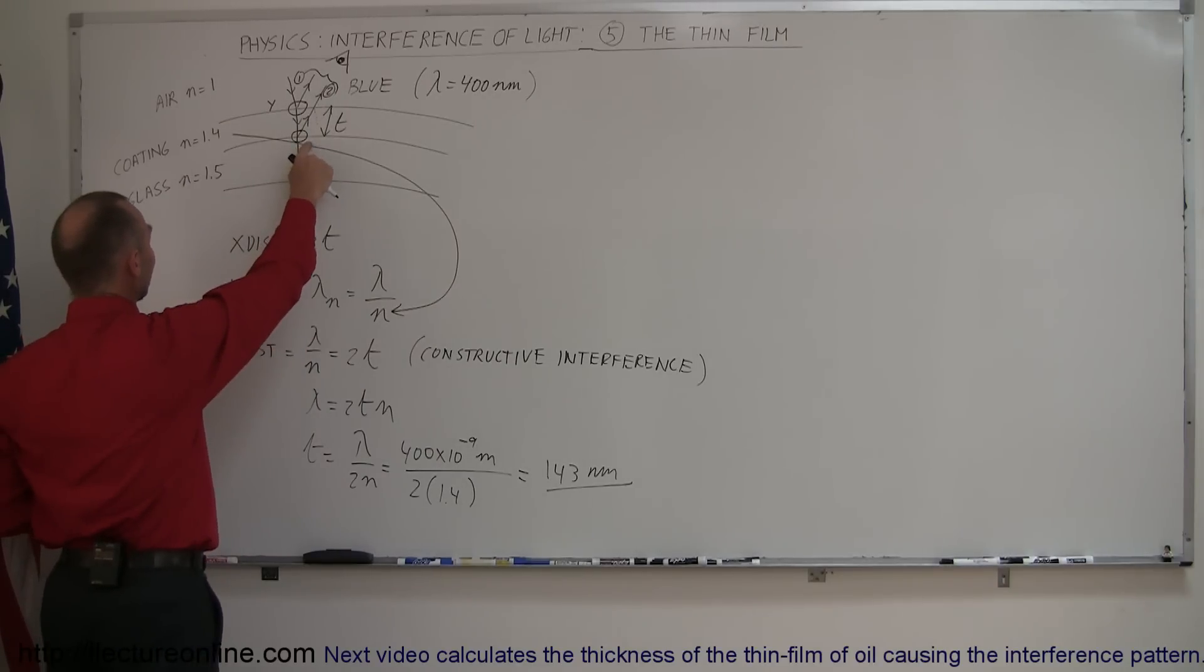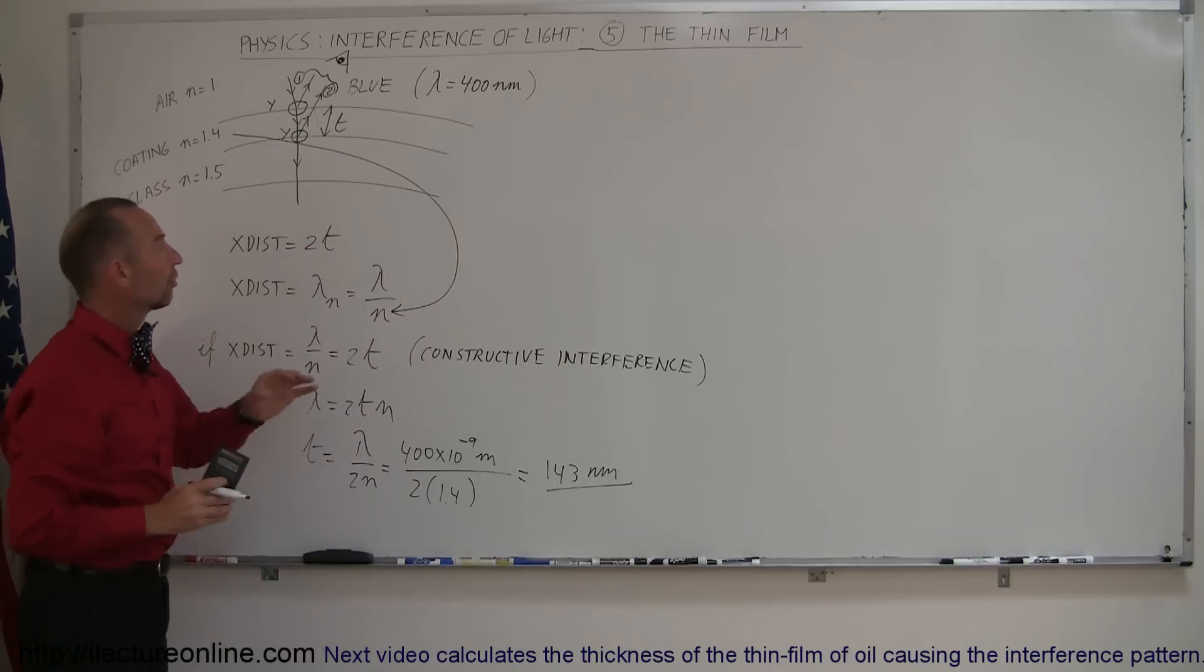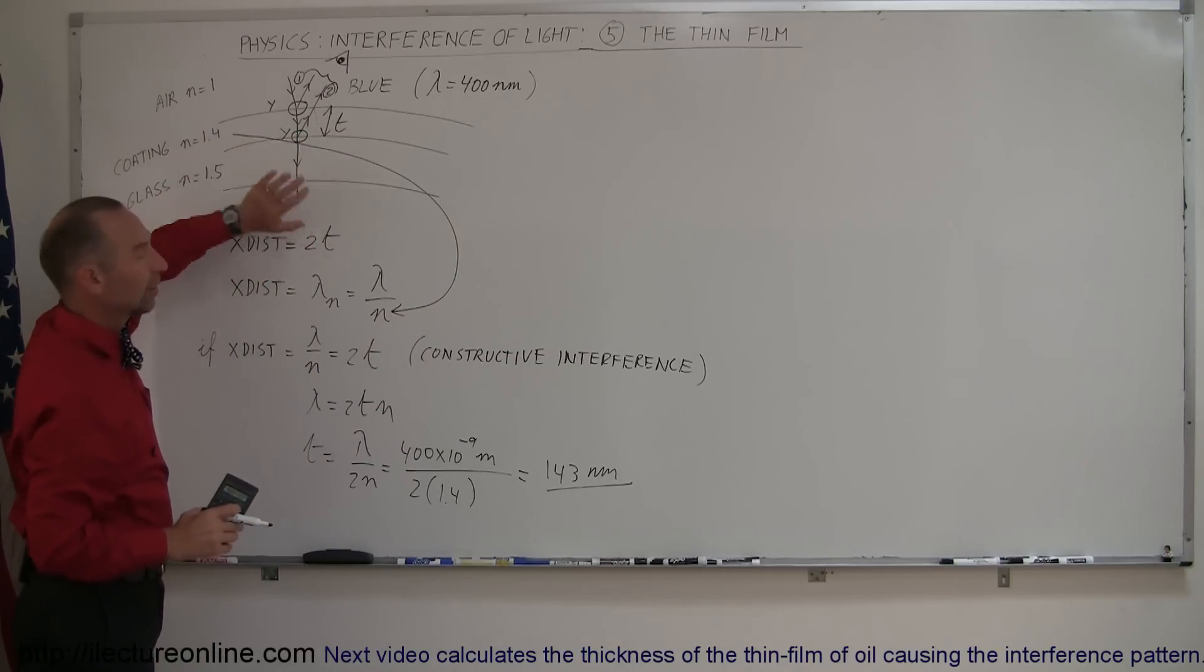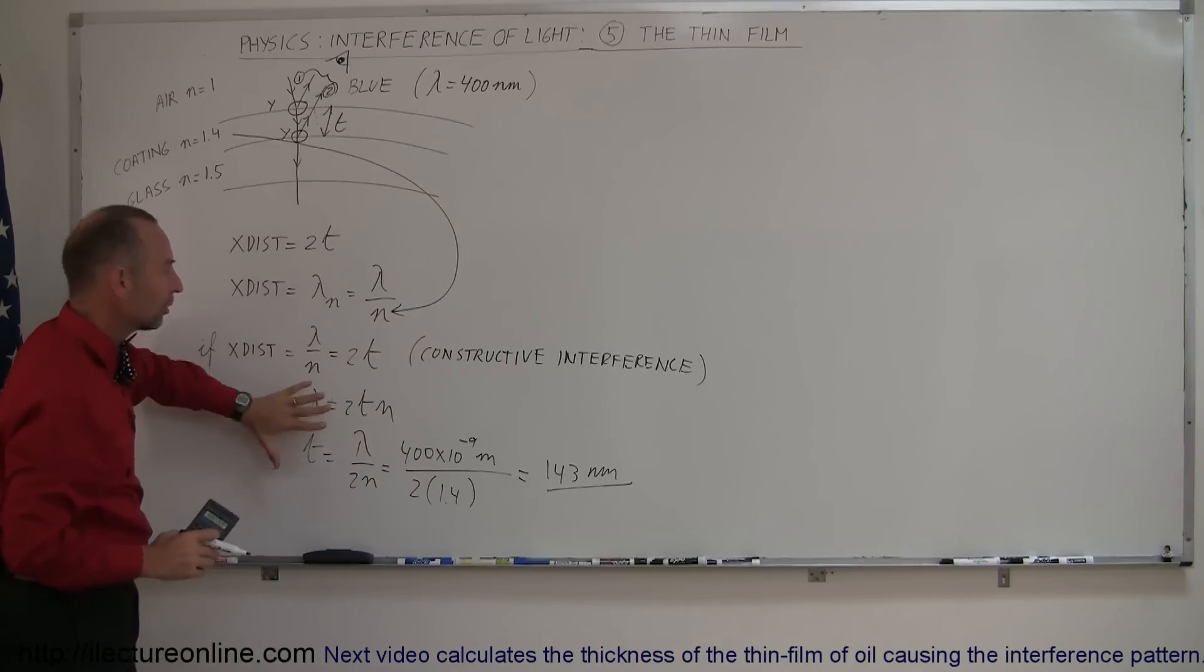On the second interface, we also have a condition where the index of refraction on the other side, that for glass, is greater than the index of refraction of the coating. So there, there's going to be a phase shift as well. And if there's a phase shift at both boundaries, then we can simply ignore it, and follow this rule, and nothing has happened.